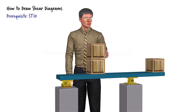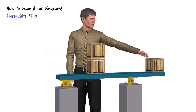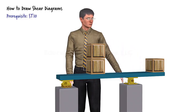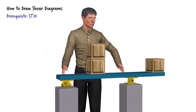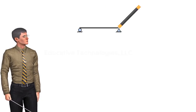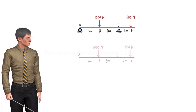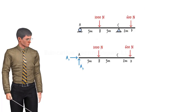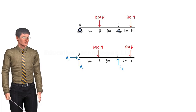Suppose these two crates exert a total force of 1000 newtons on the beam, and the force exerted by the end crate is 600 newtons. The beam is 8 meters in length, the distance between the two supports is 6 meters, and the crates are placed on the beam 5 meters apart. Let's start by taking a closer look at the beam. Here is a two-dimensional representation of it.